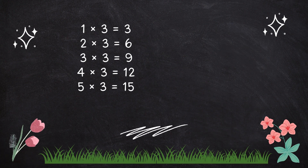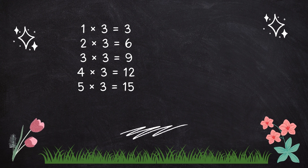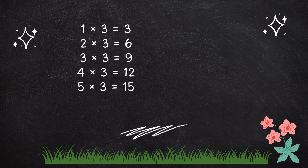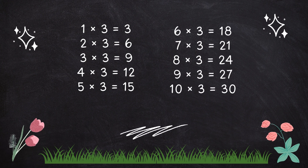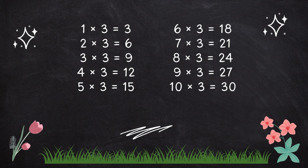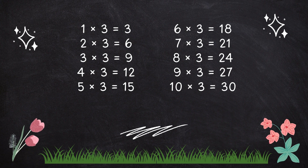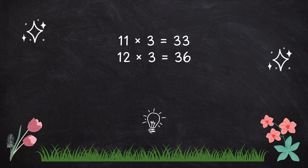1 times 3 is 3. 2 times 3 is 6. 3 times 3 is 9. 4 times 3 is 12. 5 times 3 is 15. 6 times 3 is 18. 7 times 3 is 21. 8 times 3 is 24. 9 times 3 is 27. 10 times 3 is 30. 11 times 3 is 33.